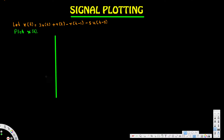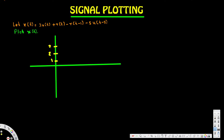Let's draw the graph. We'll plot some points — on the horizontal axis we mark 1, 2, 3 and on the negative side -1, -2, -3, -4. On the vertical axis we have 1, 2, 3, 4.